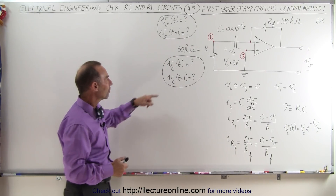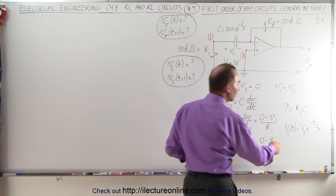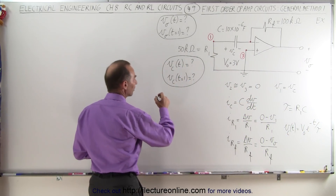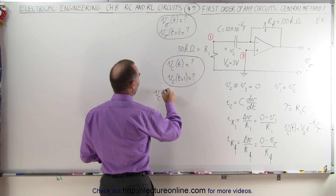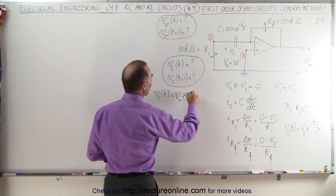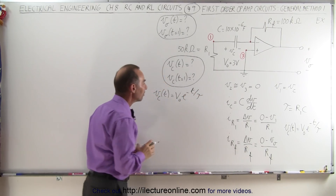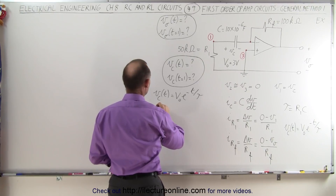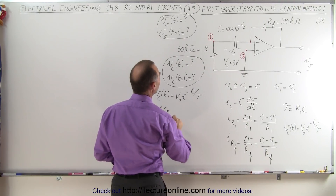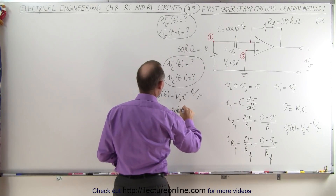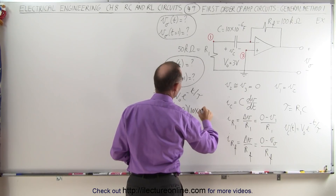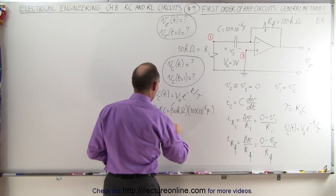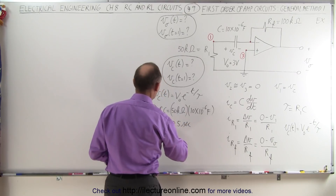To do that, first we need the equation. We know that the voltage across the capacitor equals the initial voltage times e to the minus t over tau. So starting with that basic equation, we need to find tau. Tau equals R1 times the capacitance, which is 50 kilohms multiplied by 10 times 10 to the minus 6 farads, giving 500,000 times 10 to the minus 6, which equals 0.5 seconds — a half second for the time constant.